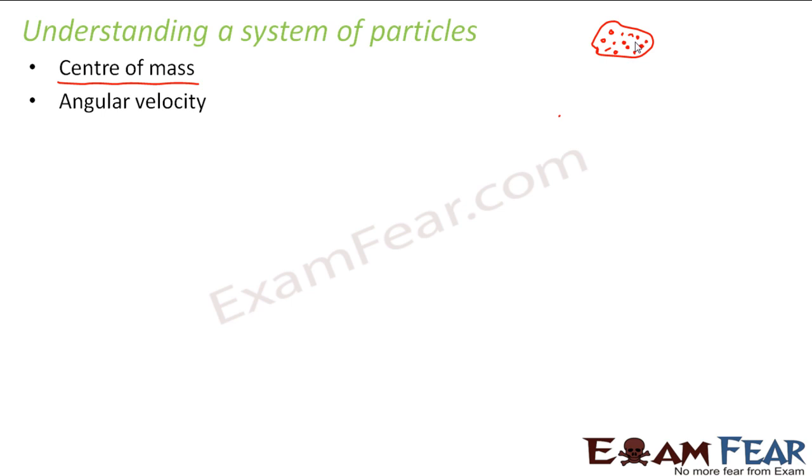The motion of a system of particles involves certain terms. The first was center of mass, the second is angular velocity, next is angular momentum, then we have torque, and then moment of inertia. These things all together help you to understand a system of particles.